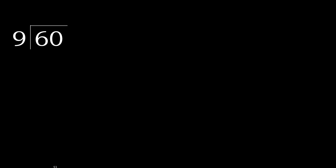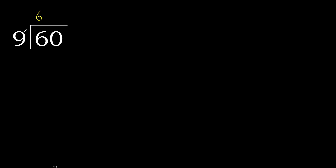60 divided by 9. 6 is less, therefore next — 60 is not less, therefore with 60: 9 multiplied by which number is nearest to 60 but not greater? 9 multiplied by 7 is greater; multiplied by 6, 54 is not greater here.